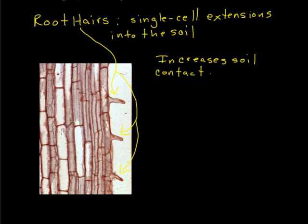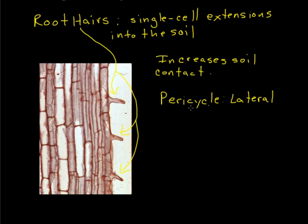In the interior portions of the root in the zone of maturation, we start to get the formation of vascular tissues — xylem and phloem. We also start to see the development of the pericycle, which is a lateral root meristem, and from this, branch roots develop.